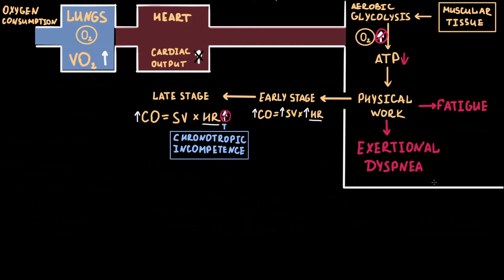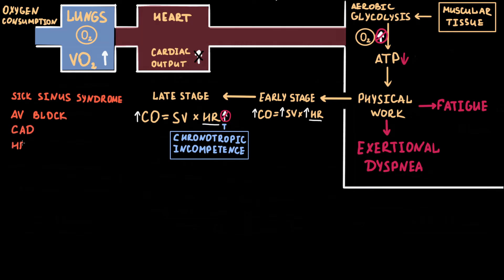The most common causes of chronotropic incompetence are various types of cardiac disease, including sick sinus syndrome, atrioventricular block, coronary artery disease, and heart failure.